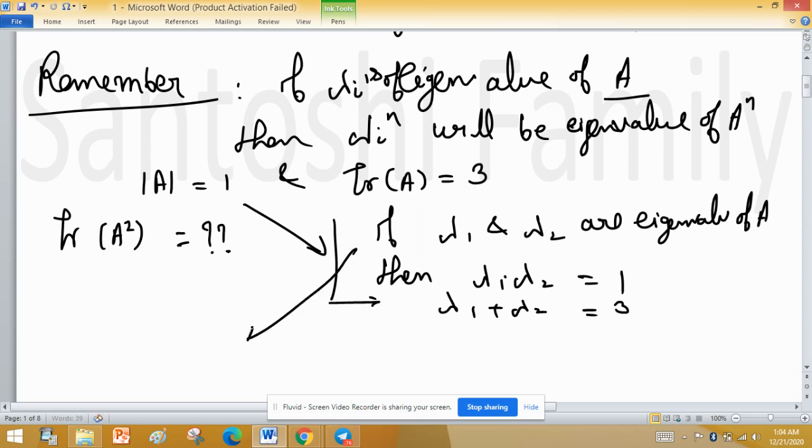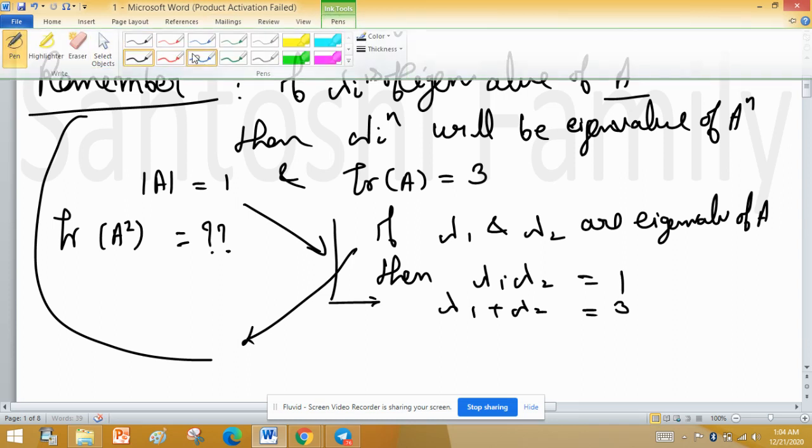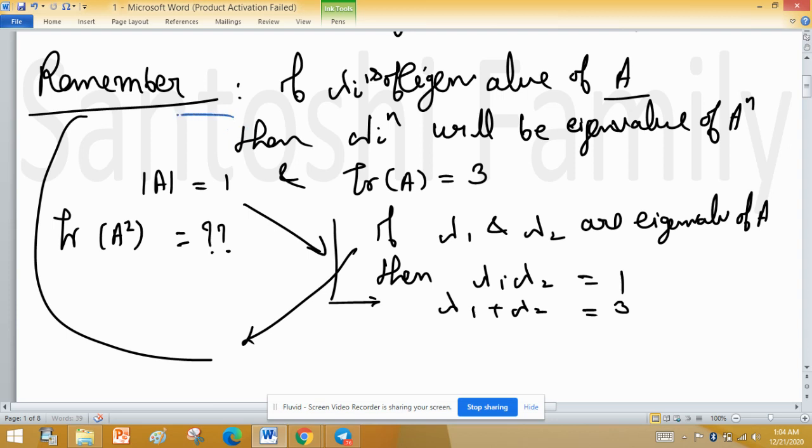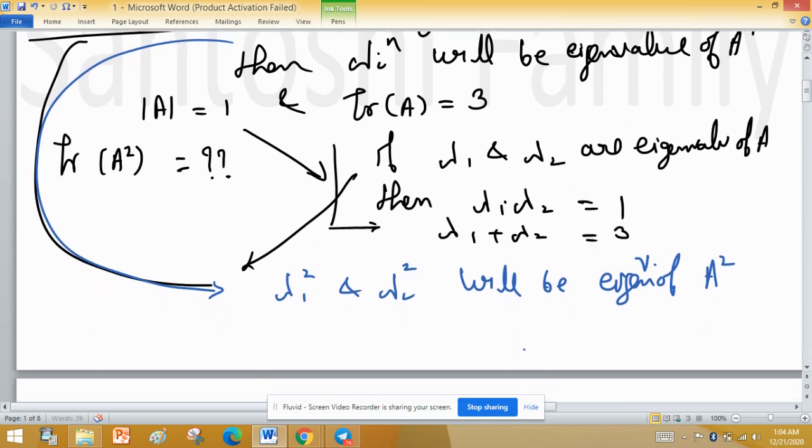If these are eigenvalues of A, then according to this theorem, lambda 1 squared and lambda 2 squared will be eigenvalues of A squared. That is, we have to find lambda 1 squared plus lambda 2 squared, which will be the trace of A squared.